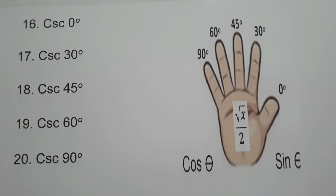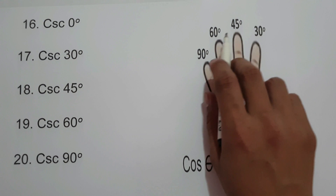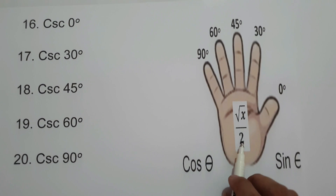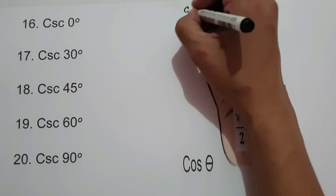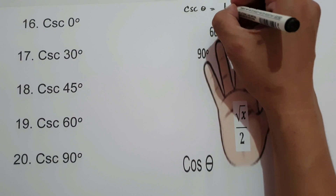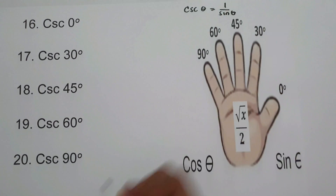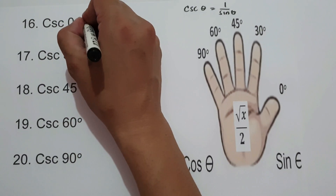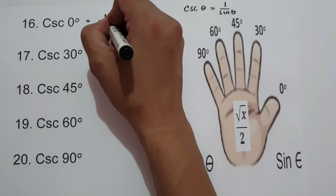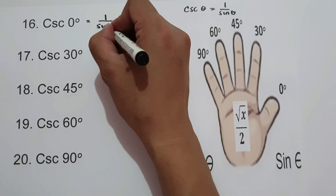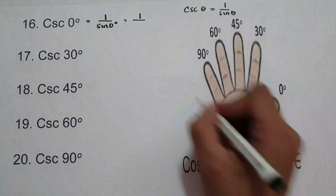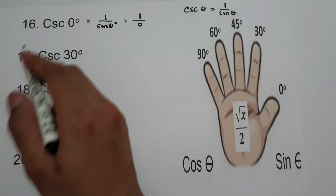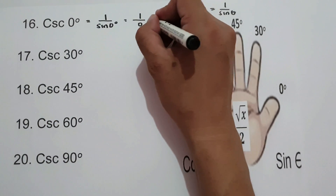On the next set of examples, we are going to find the value of cosecant 0°, 30°, 45°, 60°, and 90° using the equation square root of x over 2. We know that the reciprocal of sine is cosecant, so cosecant theta equals 1 over sine theta. For cosecant 0°, that is 1 over sine 0°, which is 1 over 0 — so cosecant 0° is undefined.